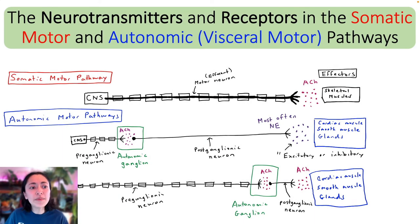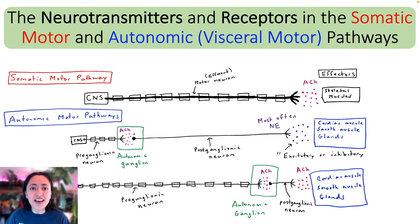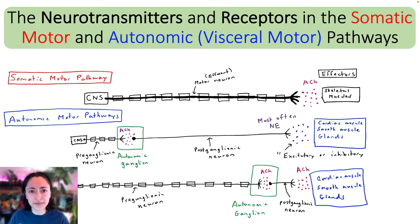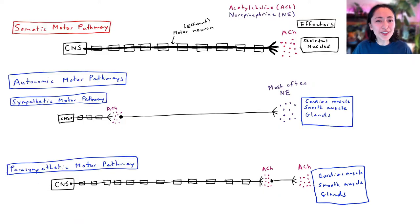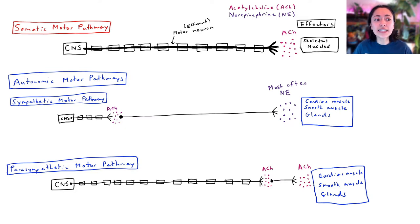In this video, we'll be taking notes on the neurotransmitters and receptors in the somatic motor and autonomic motor pathways. Another word for the autonomic motor pathways is the visceral motor pathways. Before we look at the neurotransmitters and receptors involved in both of these motor pathways in detail, let's review some of the similarities and differences between these motor pathways.